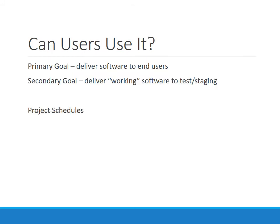So what really defines success? Can users use it? Project schedules really aren't the way to measure success — checking off tasks, milestones, and activities off your project schedule means nothing to an end user. What do they want? They want to be able to touch it, feel it, use it, experience it. Your primary goal is to deliver software to end users. If for some reason you can't do that as early as you'd like, the secondary goal would be to deliver working software to some test or staging environment, where at least internal stakeholders can touch it, use it, and experience it, and provide some feedback until you're ready to move to production. The end result: can users use it? Lead time and cycle times are probably your best way to measure that success.